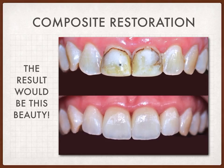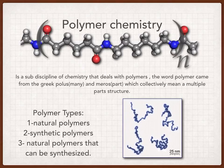Polymer chemistry is a sub-discipline of chemistry that deals with polymers. The word 'polymer' came from the Greek 'polys' meaning many, and 'meros' meaning parts, which collectively mean a multiple-part structure — like a chain of multiple parts, as we call it, a polymer.